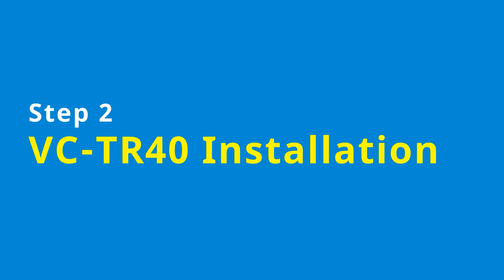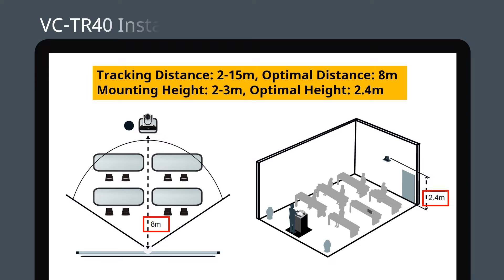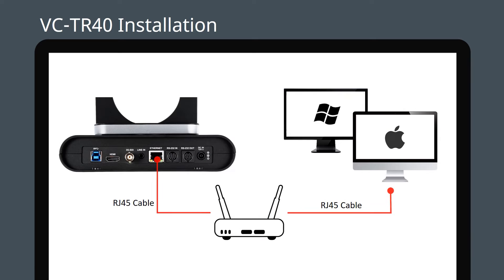Step 2: What's the best position to install the VCTR40? The camera gives you a lot of flexibility when it comes to placement and positioning. In this example, the camera is mounted high at the back of the room. Connect the VCTR40 to your router or switch. The camera can be powered over Ethernet if your network supports PoE.